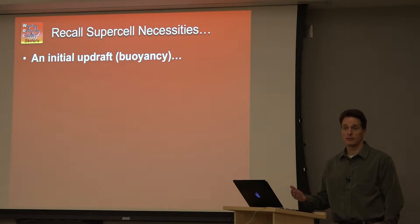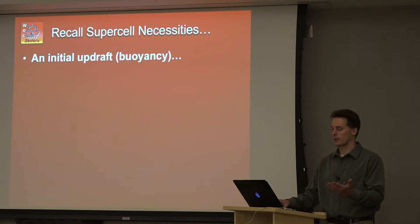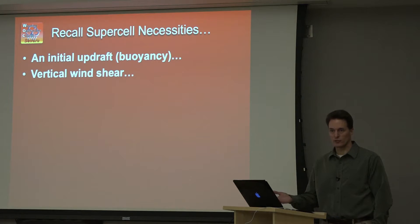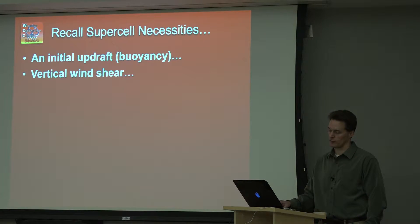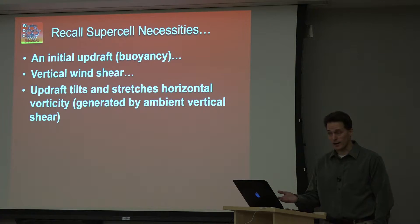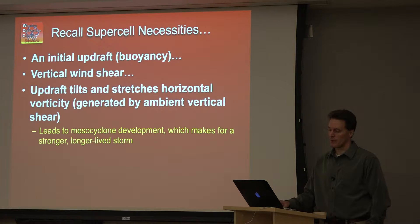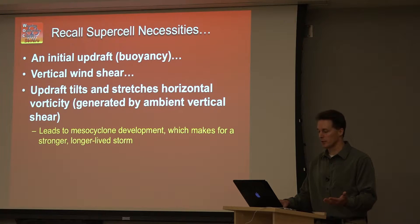Recall the necessities for a right-moving supercell. We need an initial updraft, so we have to have buoyancy — we can quantify that with CAPE. We need vertical wind shear through a sufficient depth and of sufficient strength. We'll talk about what we mean by 'sufficient' as we go through this. The updraft tilts and stretches vorticity from the ambient vertical wind shear to give us a rotating updraft, which gives us the characteristic mesocyclone that makes a supercell storm unique.